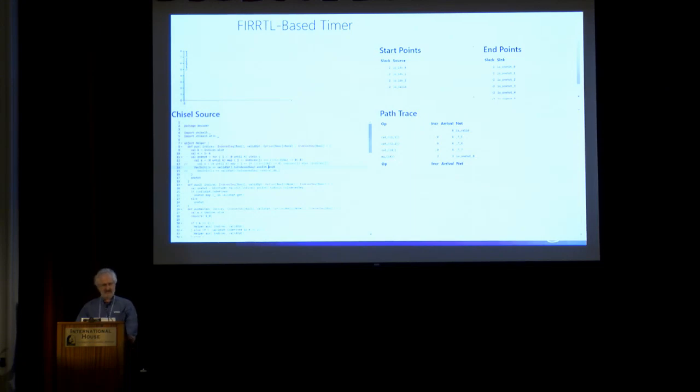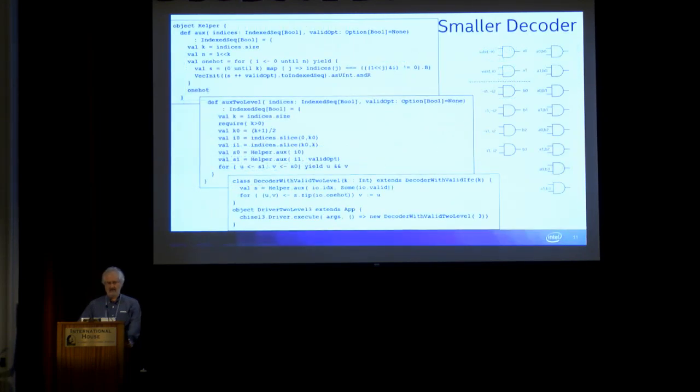If you click on that sink or source, it will then give you a path trace. If you click on the path trace, then it will highlight where in the Chisel code that corresponding delay element was from. So this helps you understand what's going on in the circuit. Up in the left-hand corner, there's a histogram of all the different path delays, and it's not very interesting here because they're all sitting at -2.